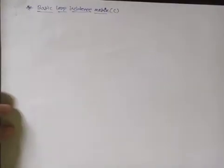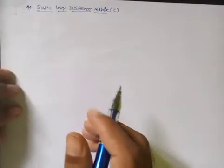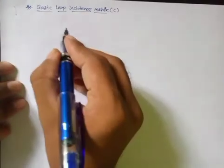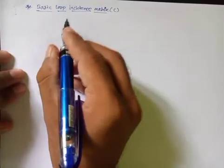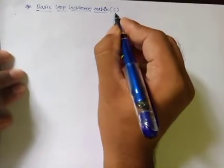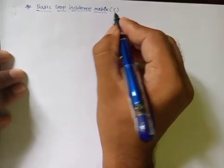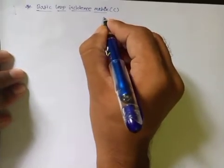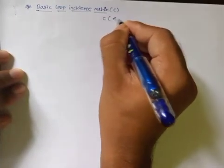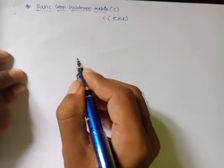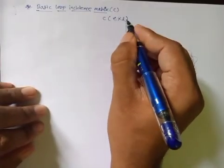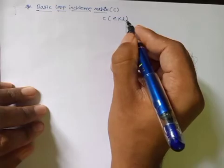Welcome, dear students, to the 11th lecture of graph theory under the CMPSA course. Today we will discuss the basic loop incidence matrix, which is generally denoted by the C matrix. The dimension of this matrix C is E × L, where E means the number of elements and L means the number of links.